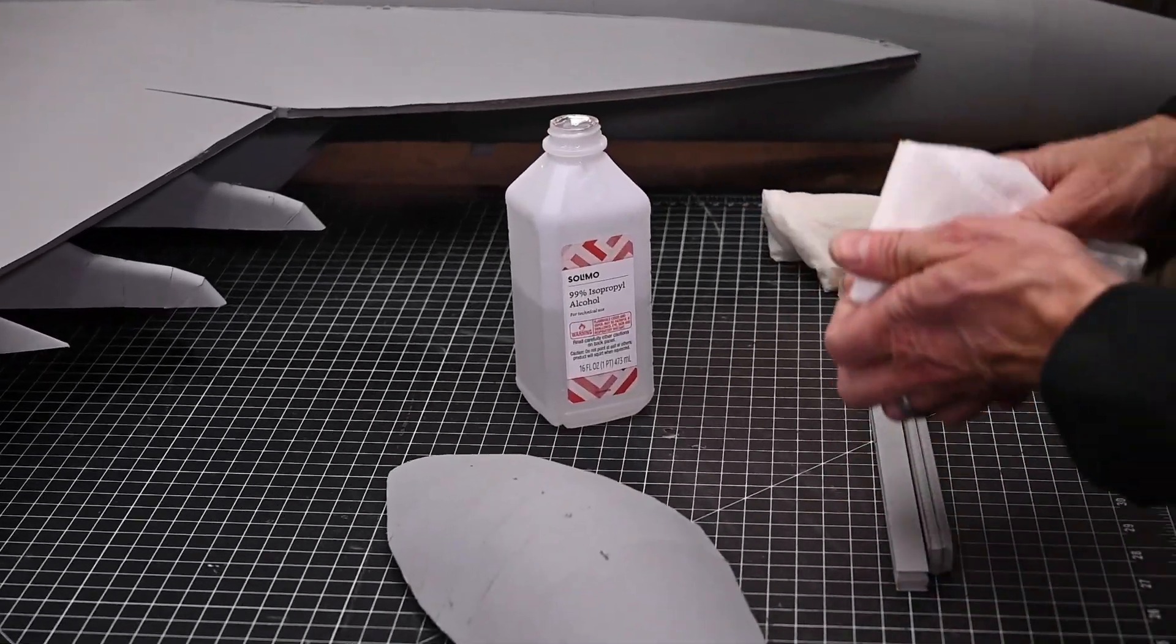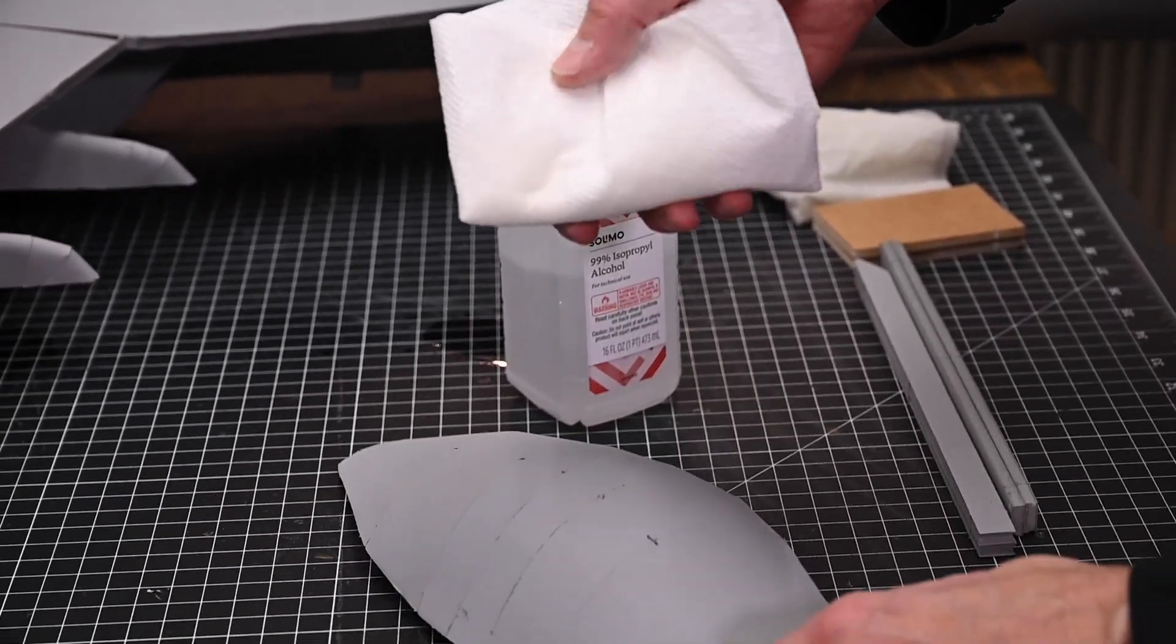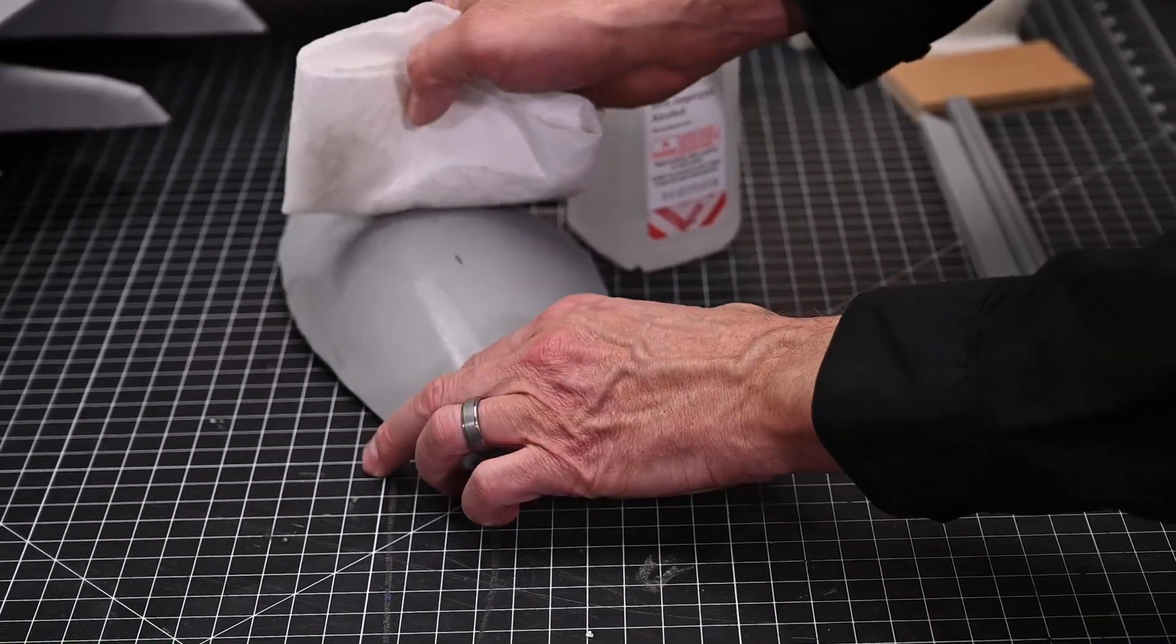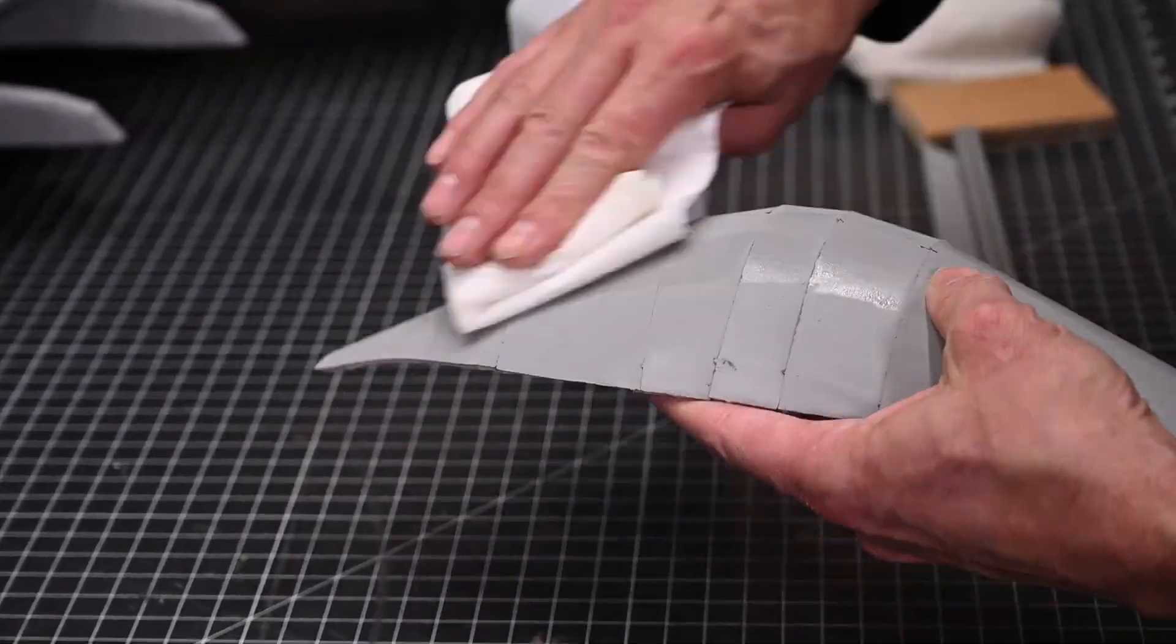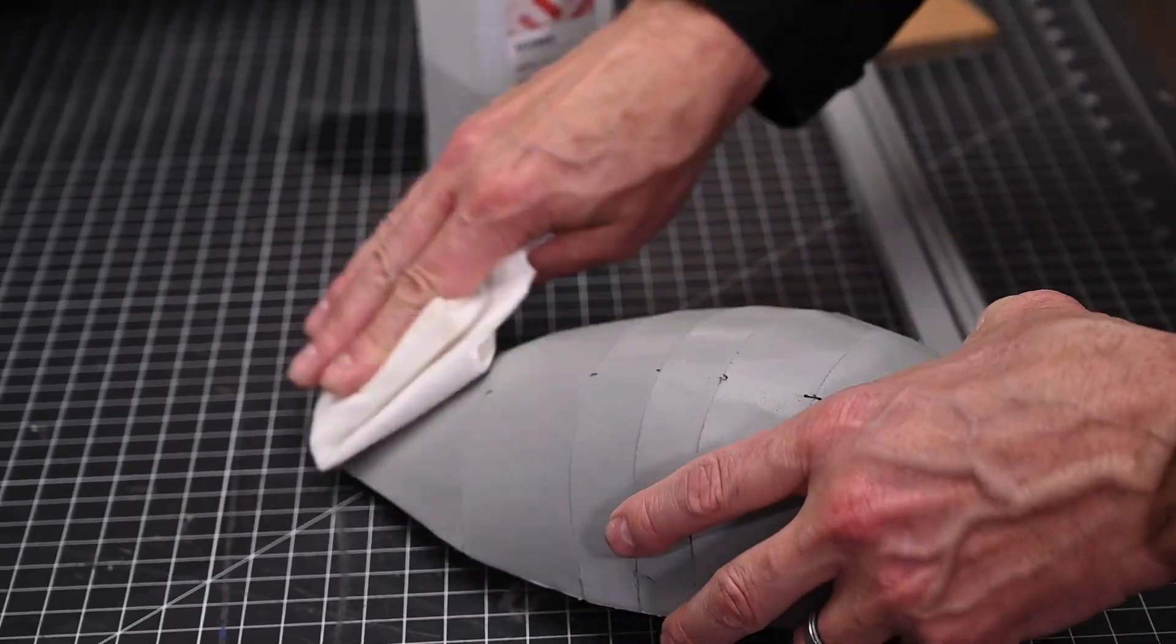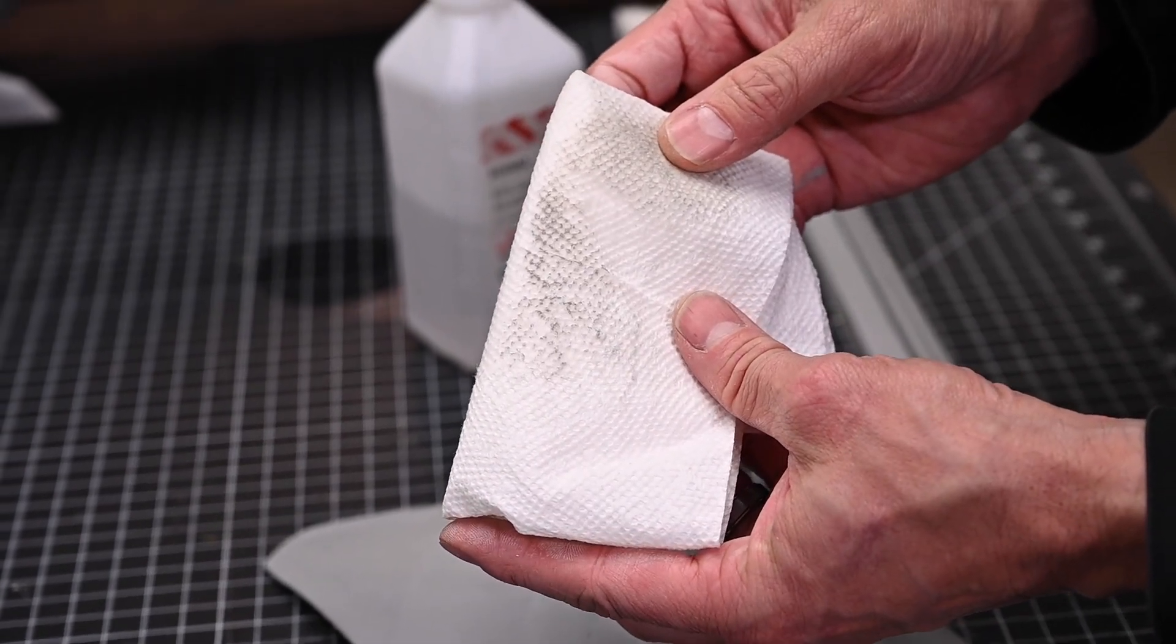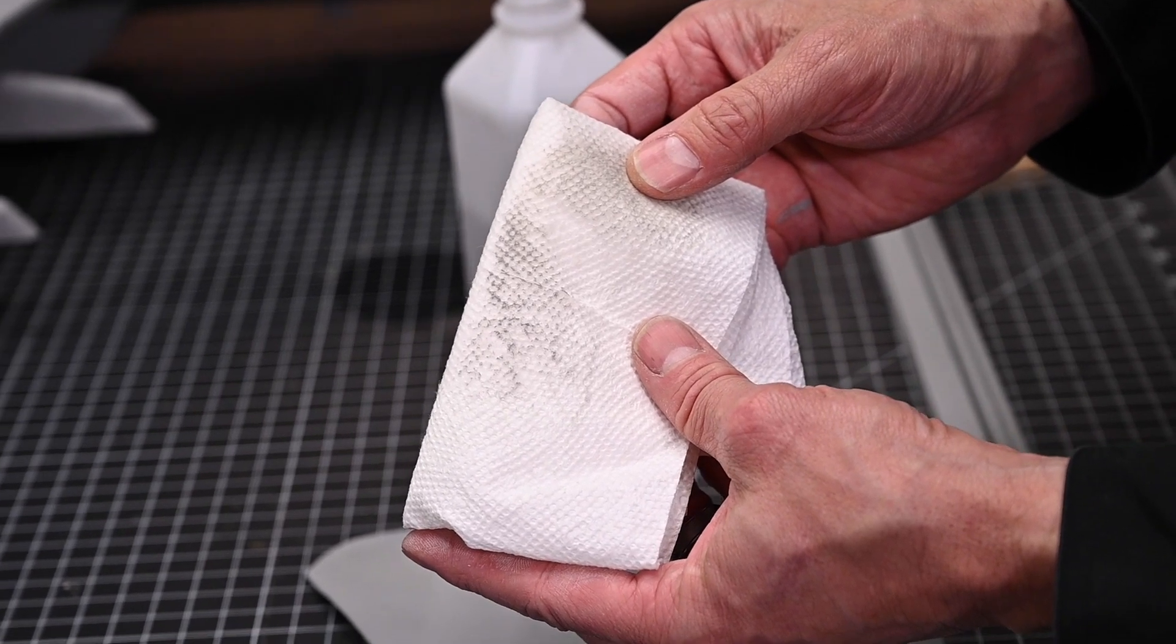You can see that I've got some alcohol. I'm using a lint-free paper towel. I'm simply going to wipe the surface off. Look at all that dust residue we removed from the canopy. If you don't have alcohol, you can always use a paper towel and water. It just takes a little bit longer before you're able to apply your decal.